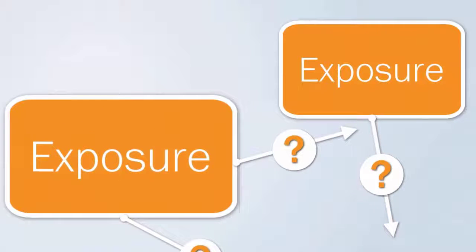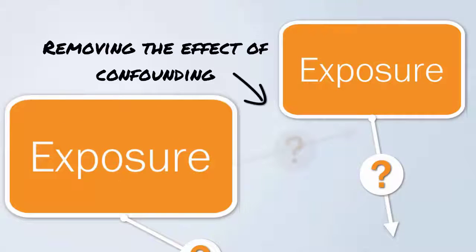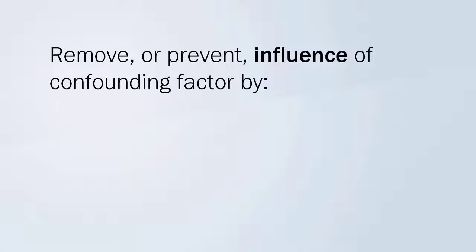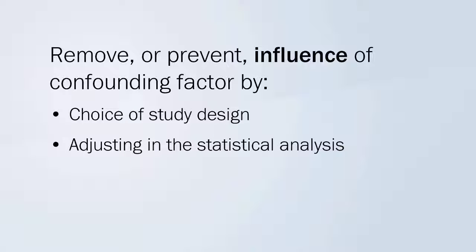With confounding, the investigator wishes to remove or prevent the influence of the confounding factor in order to get nearer the truth. This is done either through choice of study design or by adjusting or controlling for the confounding factor in the statistical analysis.